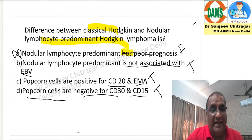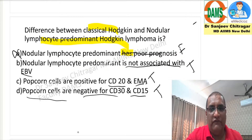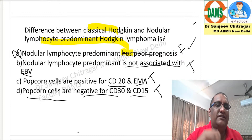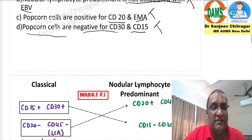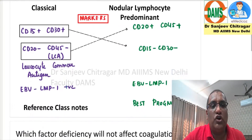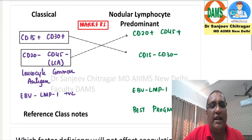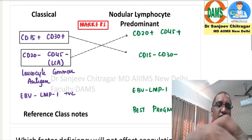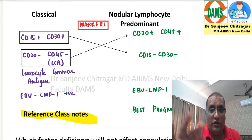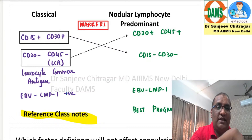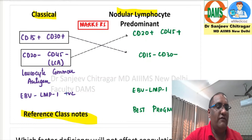Some of you are saying 'except' was the format, some are not — whether it was multiple choice or single choice. If there was an 'except' or 'which is not true,' the false statement is the one about poor prognosis. So let us look at where we studied this — I'm just putting a screenshot of my class notes. The reference for this question is your class notes. Open your class notes and you will see the classical and the nodular lymphocyte predominant.